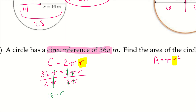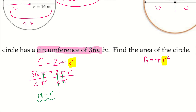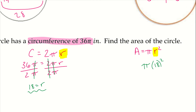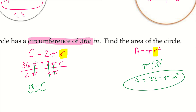Now that I have figured out my radius, I can go ahead and plug it in to find the area. So the area equals π times 18 squared, which gives us 324π inches squared. This one is inches squared because area units are squared.